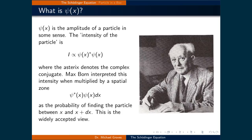Max Born, who is pictured on the right, interpreted this intensity when multiplied by a spatial zone as the probability of finding a particle between x and x plus dx. This is the widely accepted view, and it means that the intensity of a particle described by the Schrödinger equation is actually a probability distribution function.